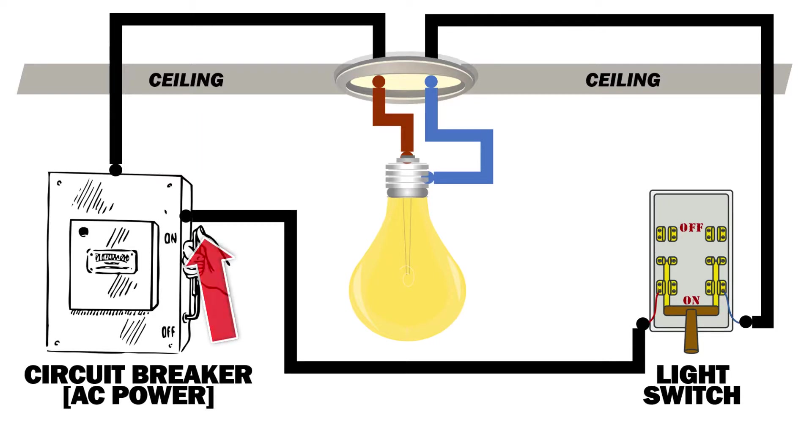This wire can run underground, inside the walls, or also above your ceiling. And as you may already know, if the circuit breaker and the light switch are turned on, a closed circuit is created where electricity can flow and thereby lighting up the bulb. Pretty straightforward.